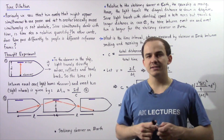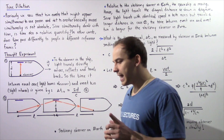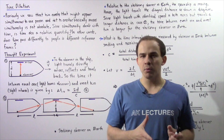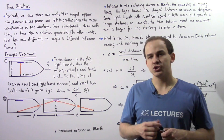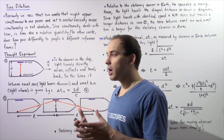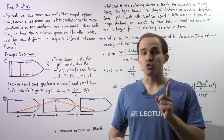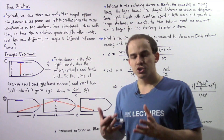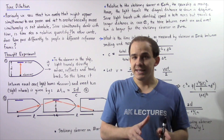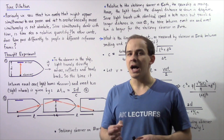In the previous lecture, we discussed the concept of simultaneous events. We said that two events that might appear simultaneous to one person do not appear simultaneous to a second person. This basically implied that the concept of simultaneity is not an absolute concept — it is relative with respect to the observer. Now, because simultaneity deals with time, is time also a relative concept?